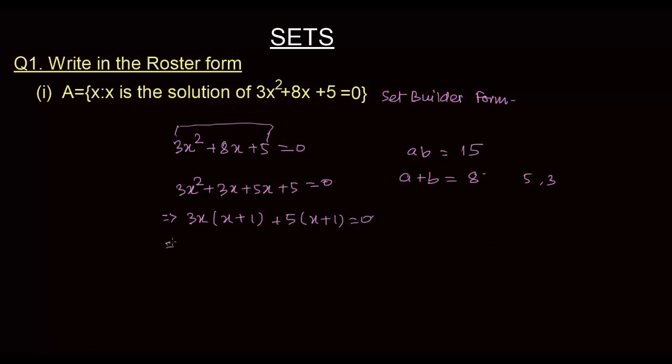Now, it implies that this is 3x + 5 into x + 1 is equal to 0. It implies that 3x + 5 is 0 or x + 1 is 0. Both of them will make it 0. So, it means x is -5/3 or x is -1.